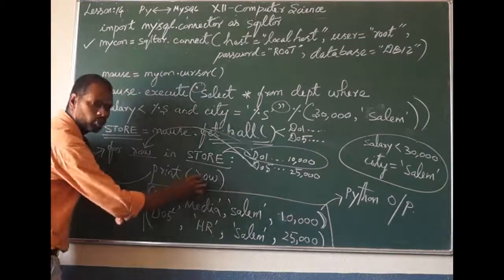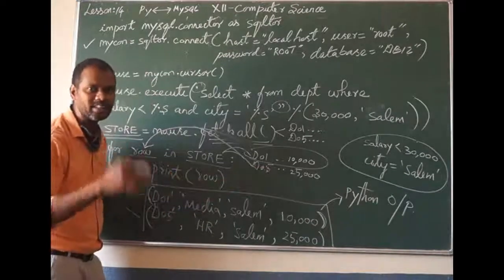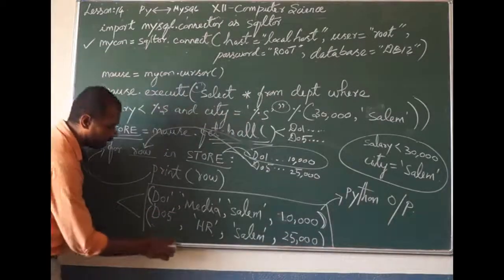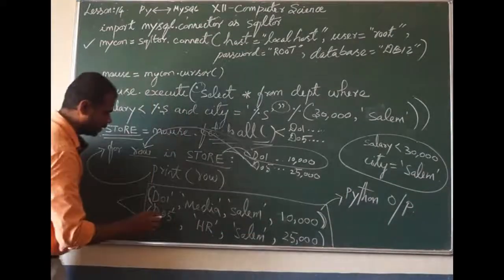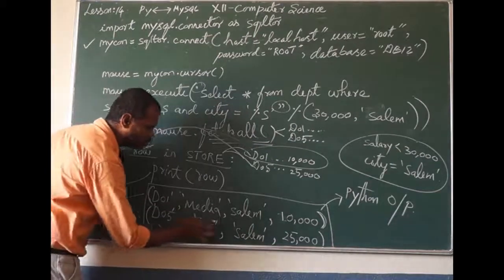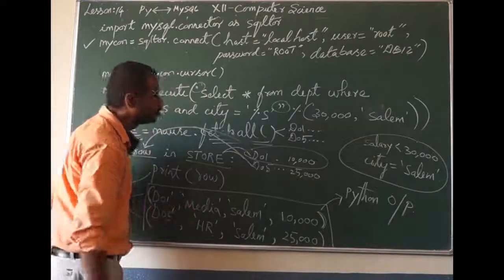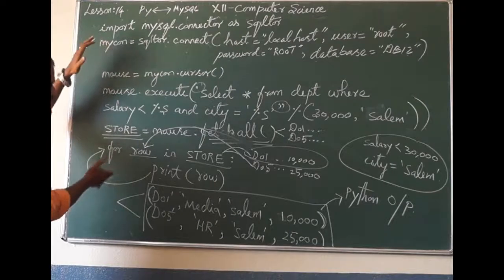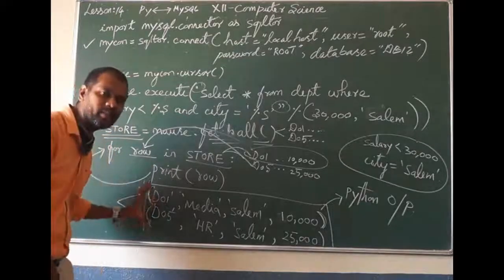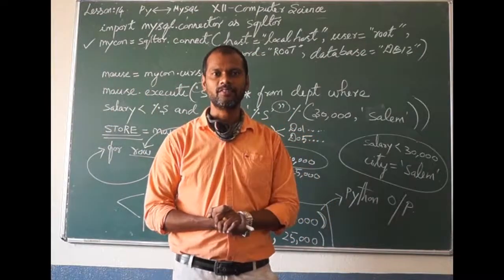After finishing D01, the loop goes again. The row will receive the next data, which is D05. Print(row) will print D05: HR, Salem, 22,000 — again with brackets and commas. This is the final program and this is the output. The output came from SQL and it is printed in Python. See you in the next class. Thank you very much.